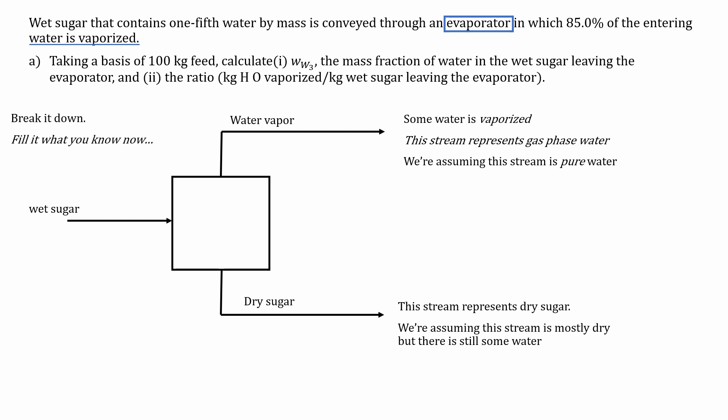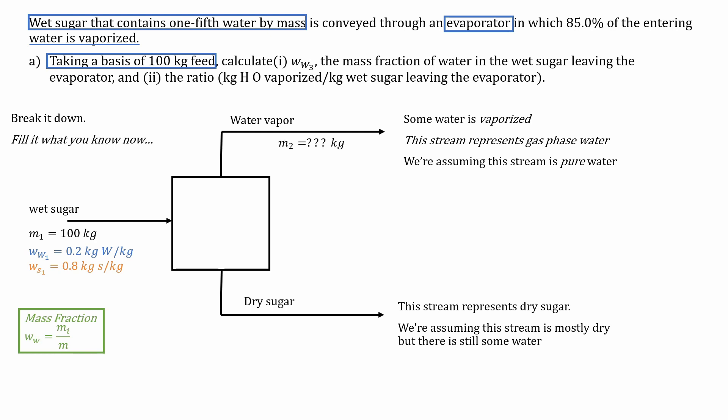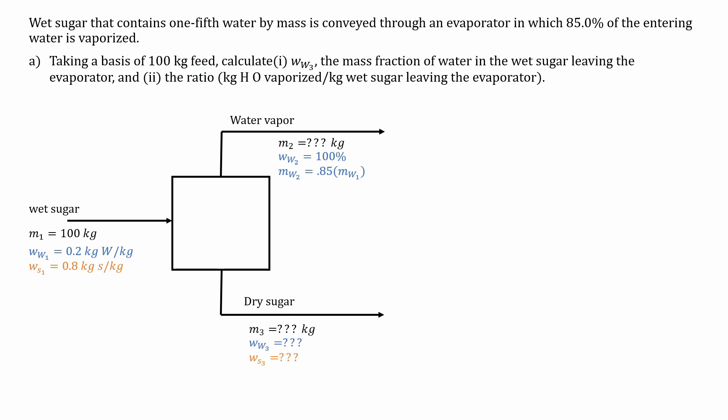Now what we can do is break it down. Fill in what you do know now. From the definition of mass fraction, we can begin to label these streams. So for the wet sugar, it contains one-fifth water by mass, and taking the basis of 100 kg feed, we can label this stream as M1 is 100 kg for the wet sugar, and the mass fraction is 20%. So its corresponding mass fraction for solids is 80%. We don't know the second stream, but we can label it as M2, and since we assume this stream is pure water, this is 100%. 85% of the water is vaporized, so we can use that as a mini-equation for our calculation. We can label this equation as 85% of the first stream. And for the third stream, we don't know that either, but we can label the mass fraction of water in the third stream.